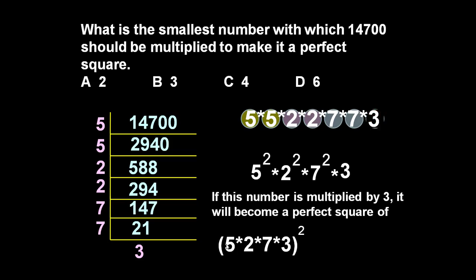So we can write 5 into 2 into 7 into 3 squared, provided we multiply this number with 3, which is equal to 210 squared. It means the given number 14700, if it is multiplied by 3, it will become a perfect square of 210.